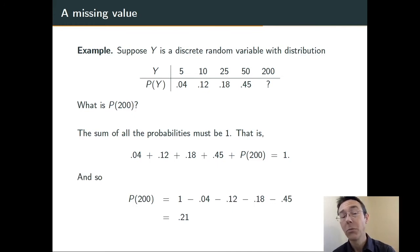So we subtract all the known values to the other side and carry out the subtraction. And we get that that question mark, the probability that Y is 200, has to be 0.21.